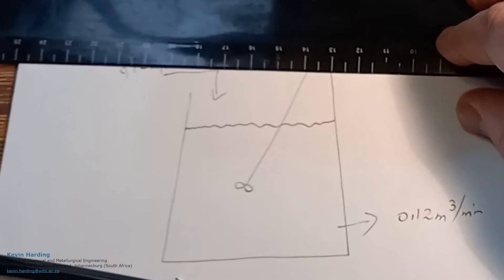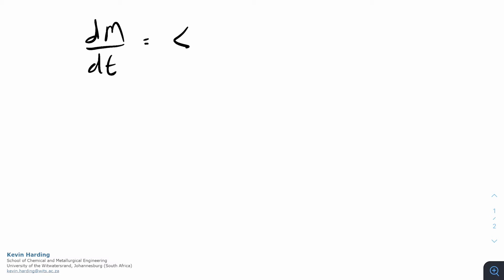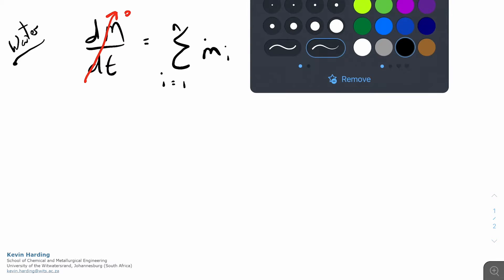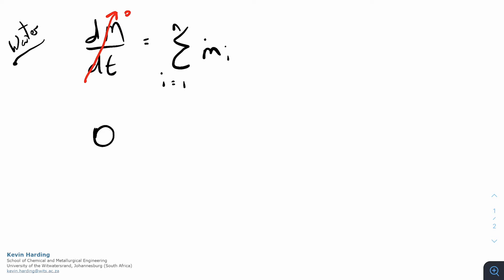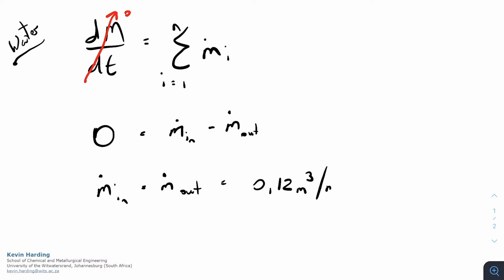We start with the mass balance of the water. For any mass balance, we begin with dm/dt equals the sum of mass flows. Since water comes in and out at the same rate, the water is at steady state. So we have 0 equals mass in minus mass out, meaning mass in equals mass out at 0.12 cubic meters per minute.